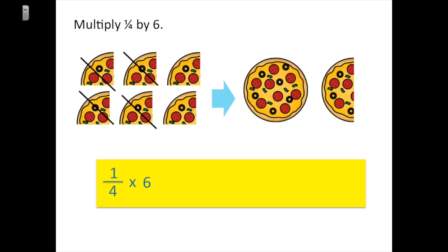One-fourth times six equals one times six-fourths — think carefully about what that means. We're multiplying our numerators: one times six equals six, and we keep four in the denominator, giving us six-fourths. You can see in the picture that we do have six-fourths. Then we change this improper fraction to a mixed number: six-fourths is the same as one and two-fourths, which when simplified is one and one-half.